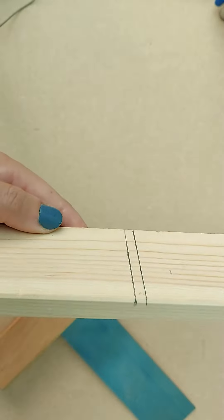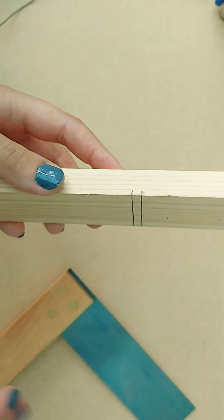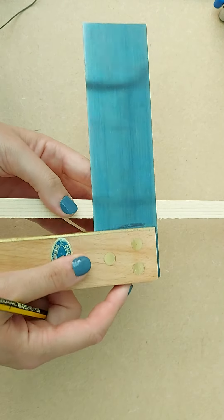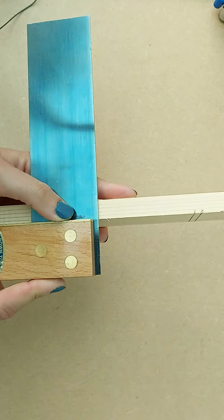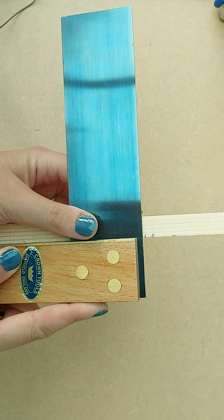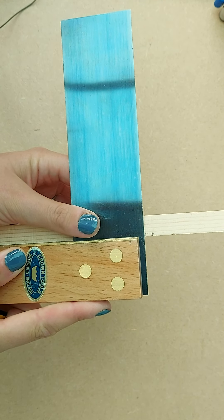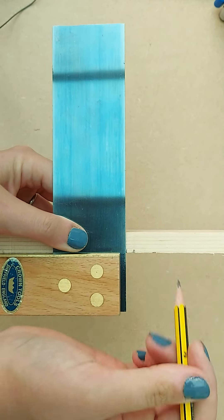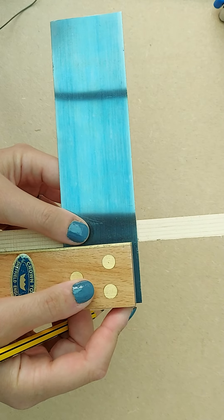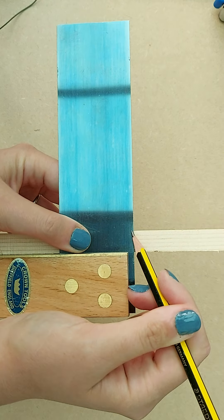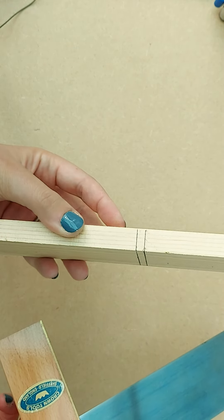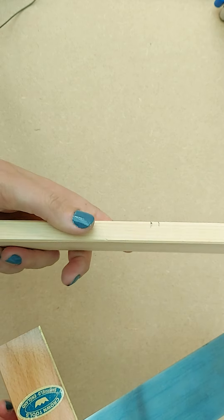Next we're going to get our tri square and rest it so the stock, which is this bit here, is right along the edge. We're going to move it so the blade, which is this long metal bit, is underneath our lines we've just marked. Take your time with this - it is fiddly. And then using my sharp pencil, I'm just going to mark that line. So all I've done so far is I've extended that line so it goes along that edge, and now I'm going to do the same on this edge here.